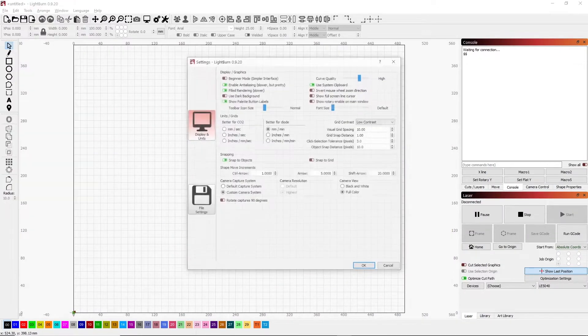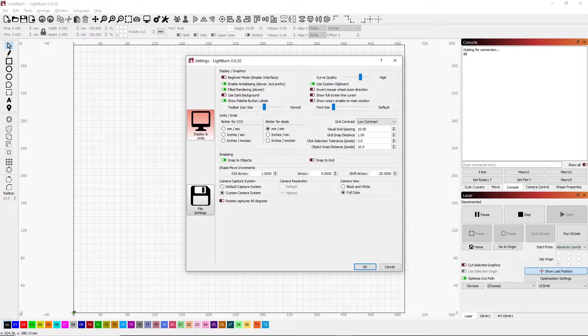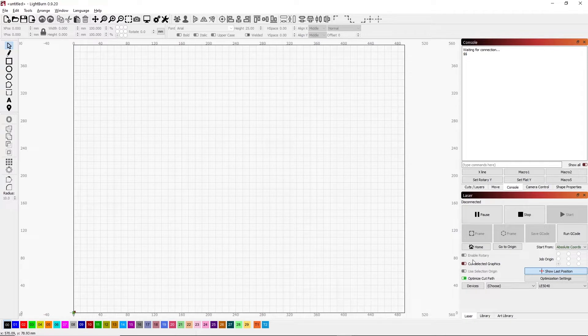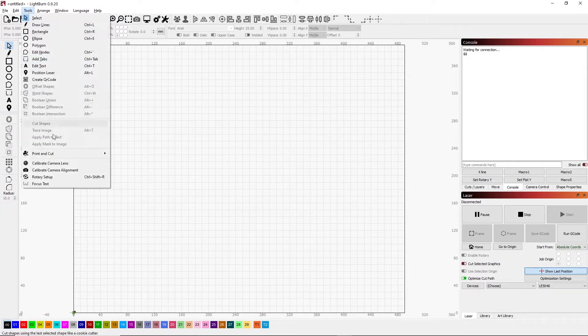One of the first things we want to do is go under Edit and Settings and turn on the Show Rotary Enabled on Main Window. This will show a little extra switch down here in the main window so we can turn rotary on and off easily.